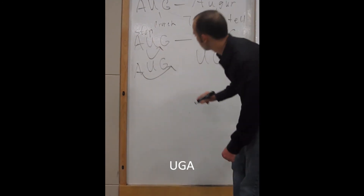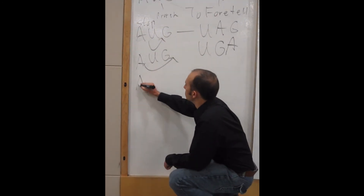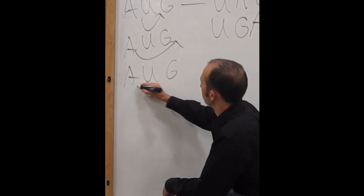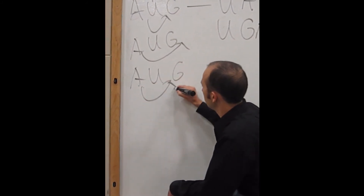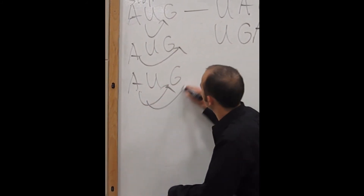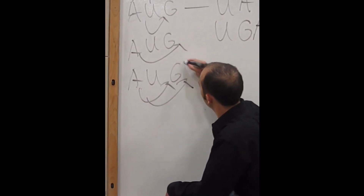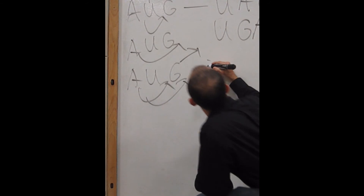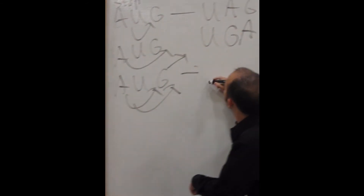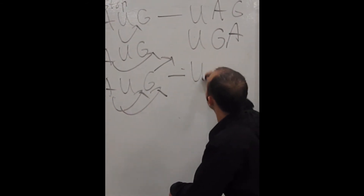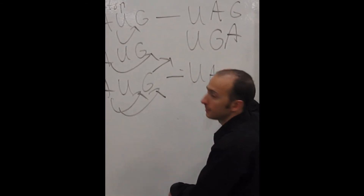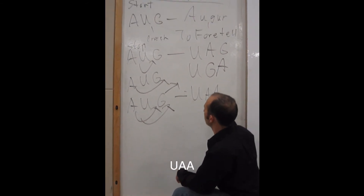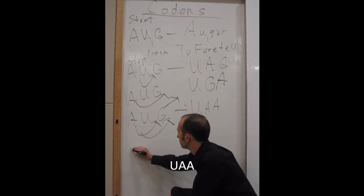And one more time. We take A-U-G, move the letter A, and the G pops out, giving us U-A-A. That is our codons.